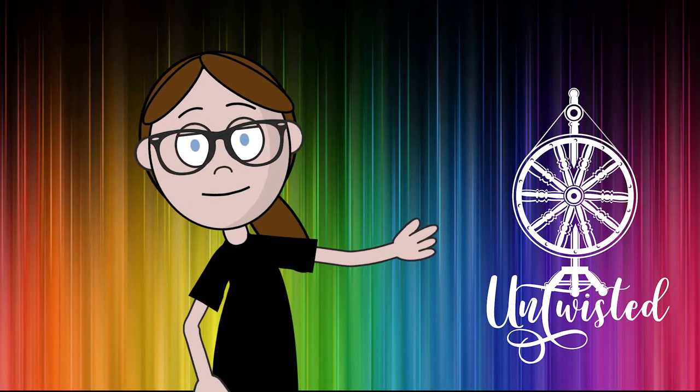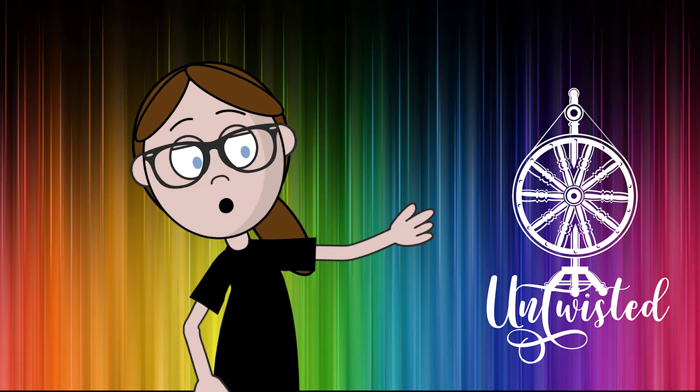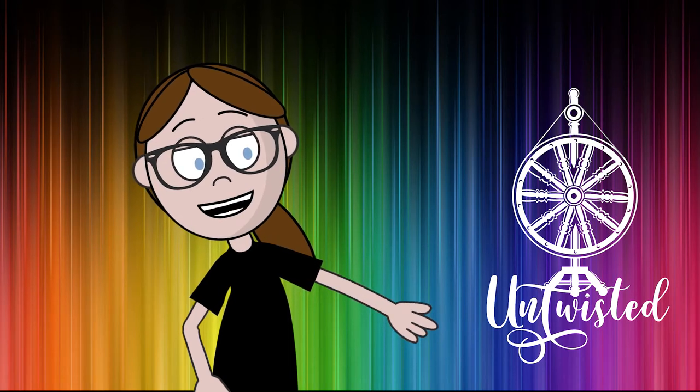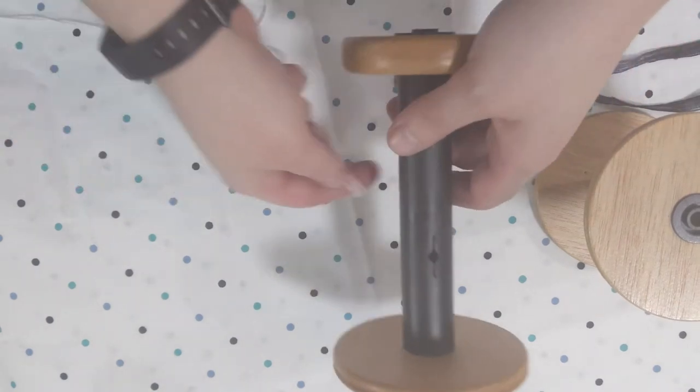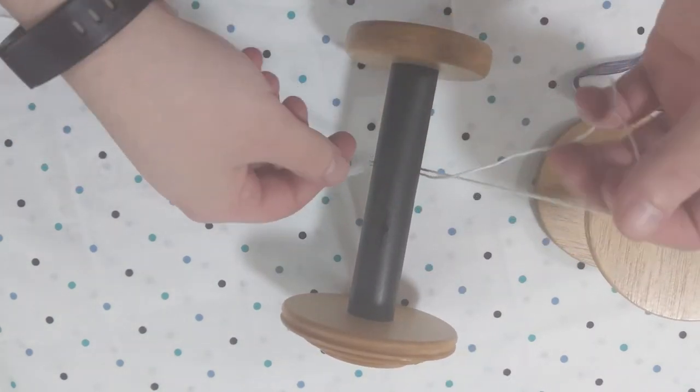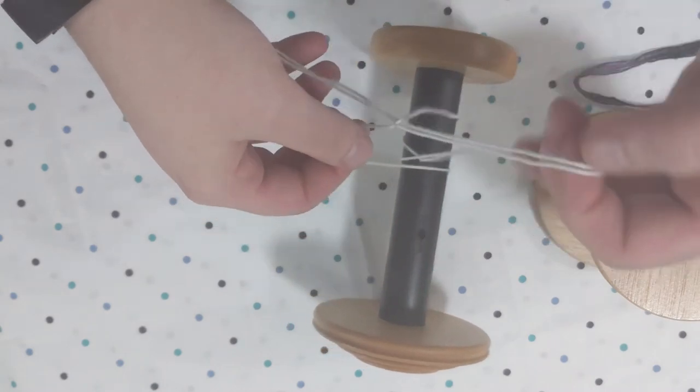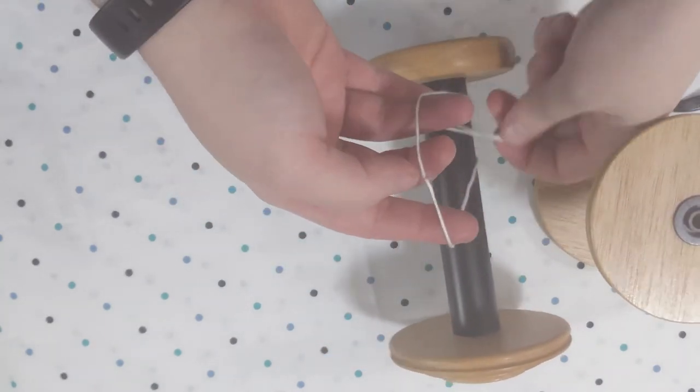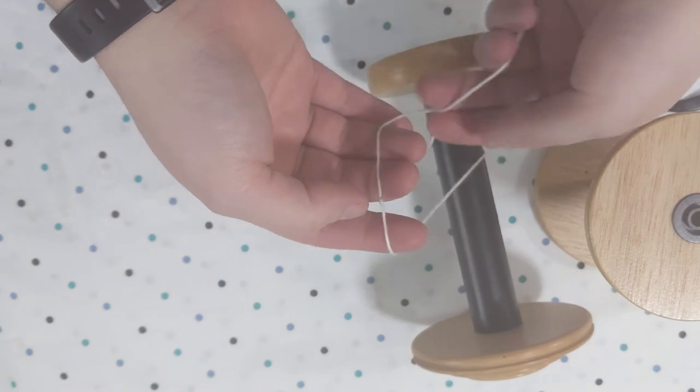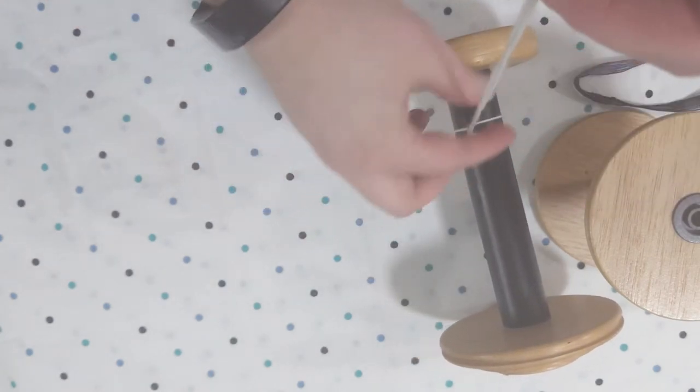Next we're going to attach our leader to our bobbin using what's called a lark's foot knot. Pass the loop that you've made underneath your bobbin. Pass one side of the loop over top the bobbin and through the loop on the other side. Pull that tight and you have your first lark's foot knot.